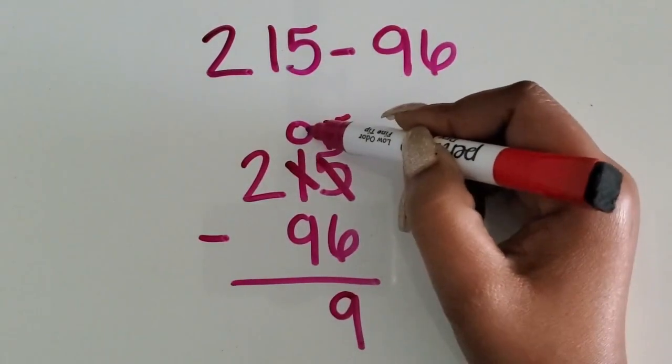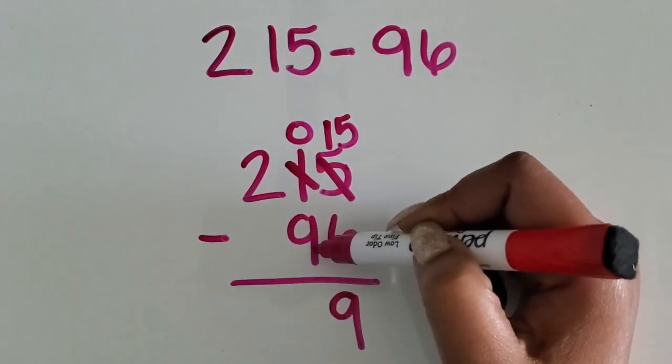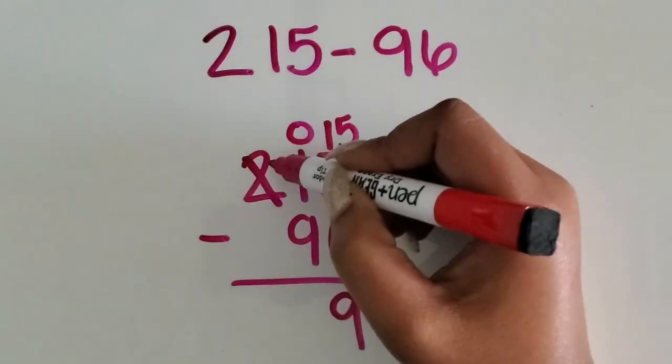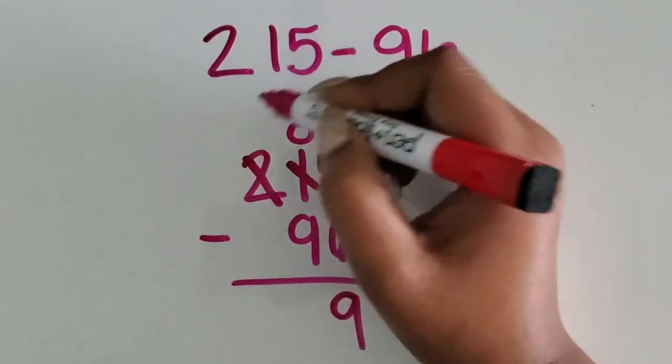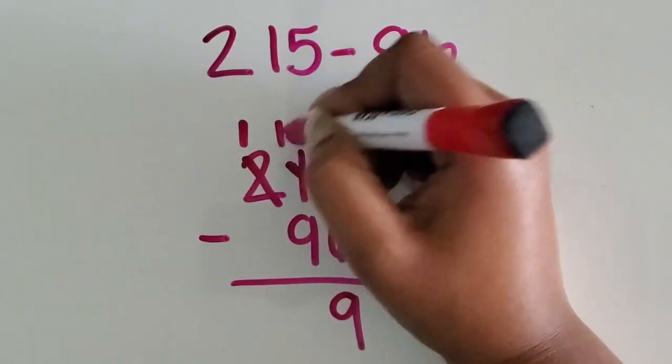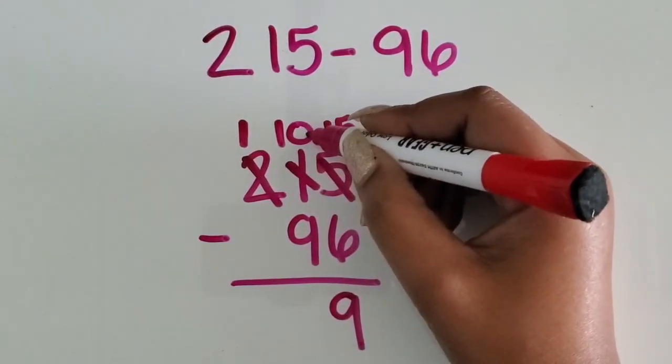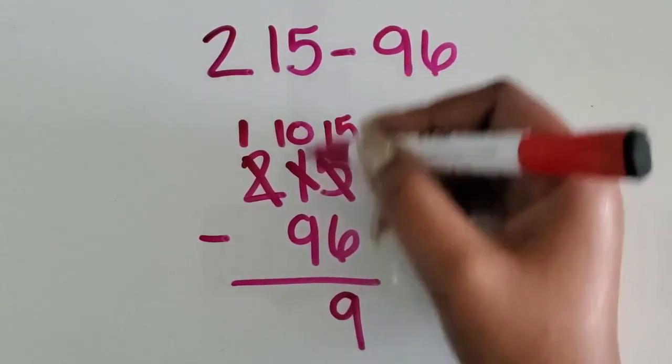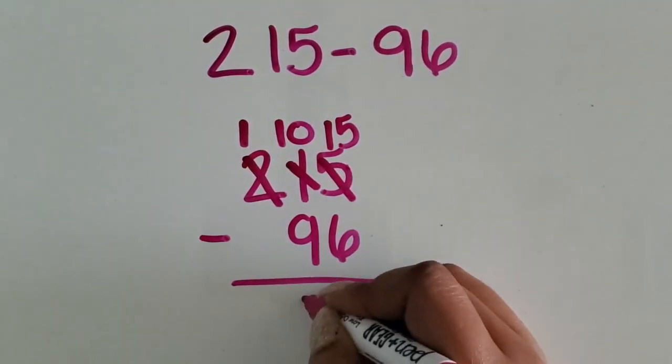Now I have zero tens, but I need to take away nine tens. So I'm going to regroup 100 and trade it in for ten tens. So now I just have 100 left, and now I'll have ten more than what I have, which is zero. So now I have ten tens. Ten tens minus nine tens is one ten.